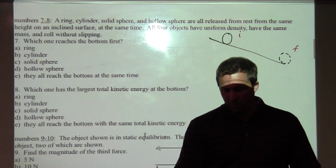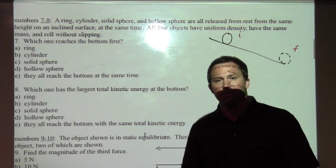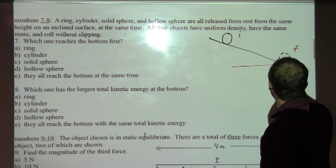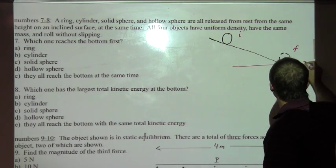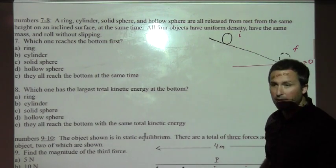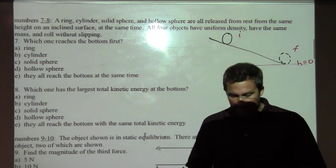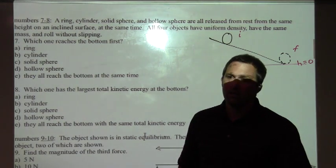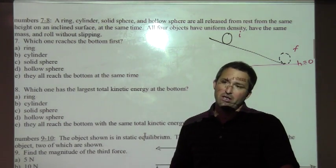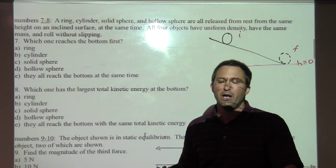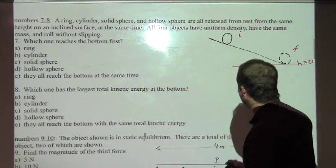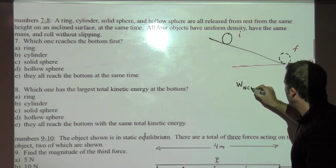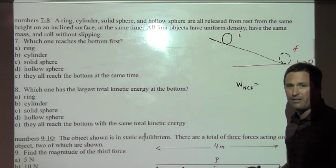Next in my work energy strategy, I choose where is the height equal to zero. Whichever point is lower, that's what I use. I'm just going to choose height zero there. And then the other thing that I need to think about is the work done by all of the non-conservative forces.